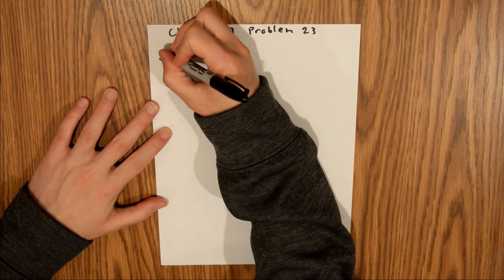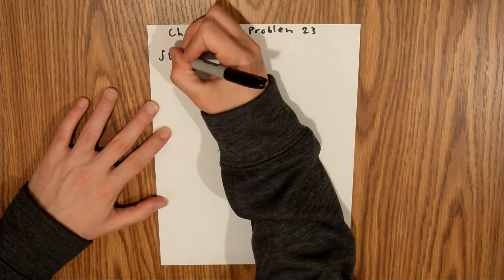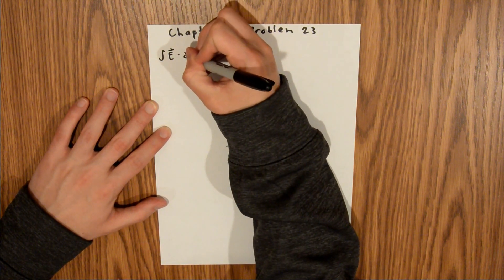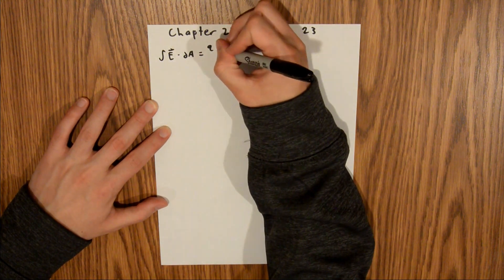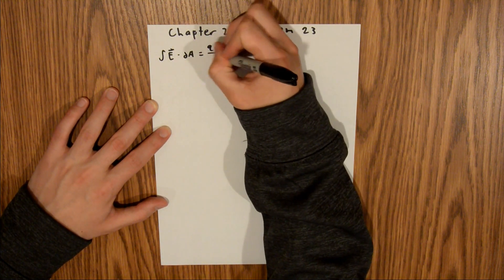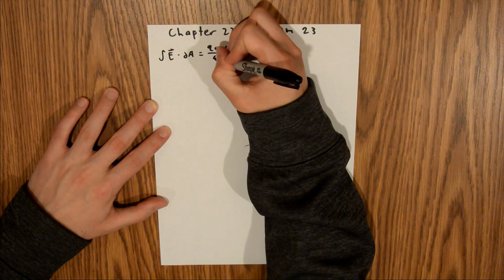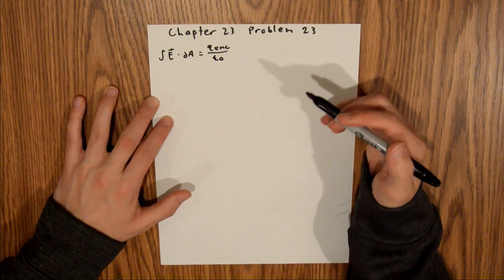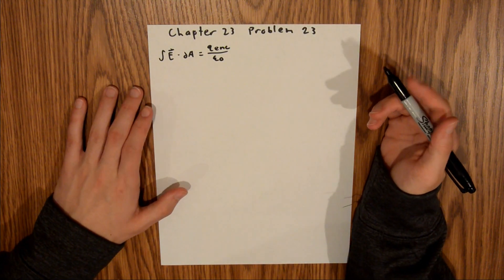And so we know that the integral of the electric field dot your differential area is equal to your charge enclosed divided by epsilon sub-zero, which is your vacuum permittivity constant.